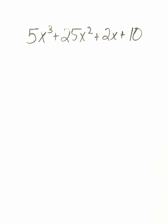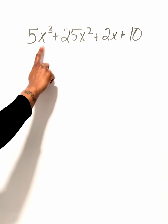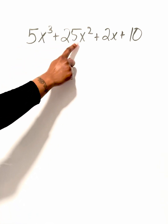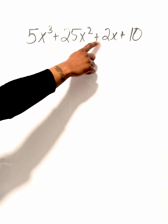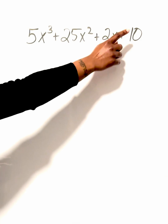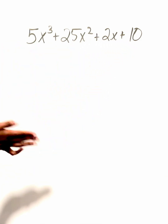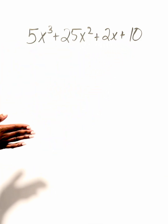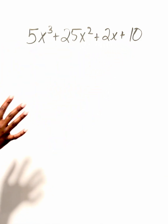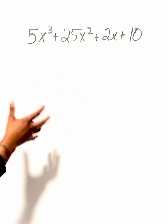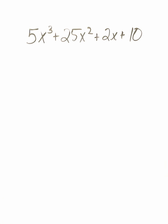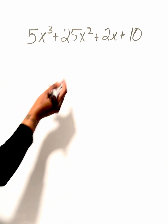We're going to take a look at factoring by grouping. Our expression is 5x cubed plus 25x squared plus 2x plus 10. When you're factoring by grouping, it's super simple — you just have to find your groove with the actual technique.